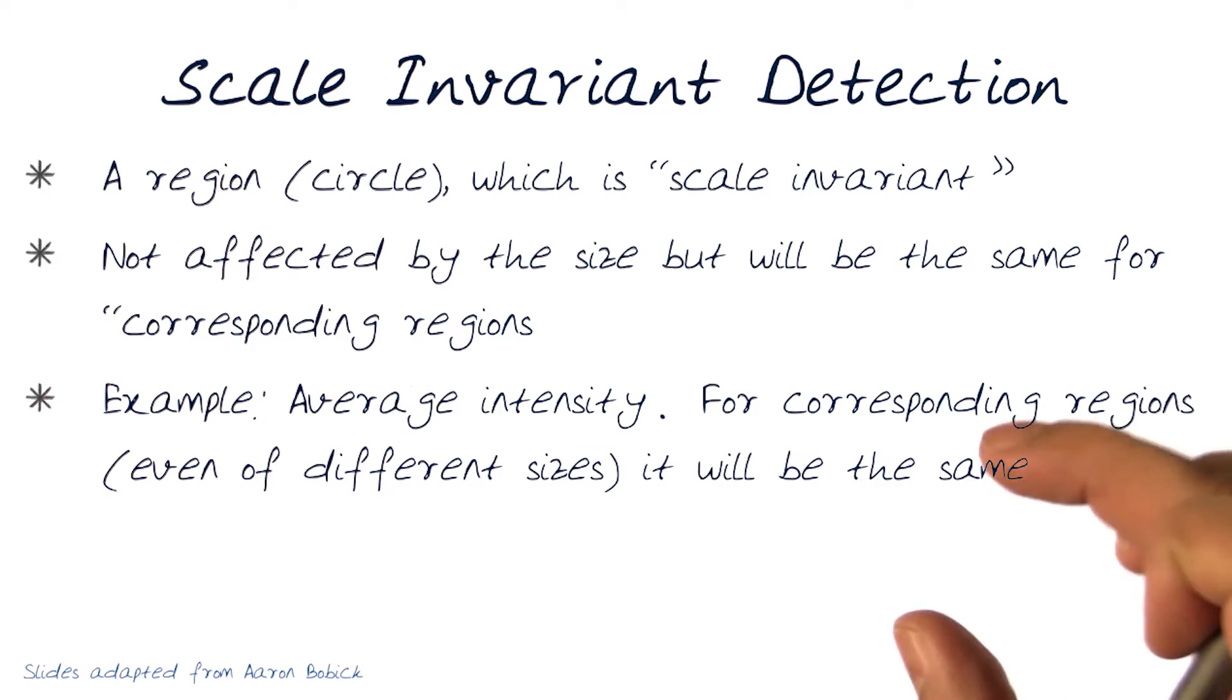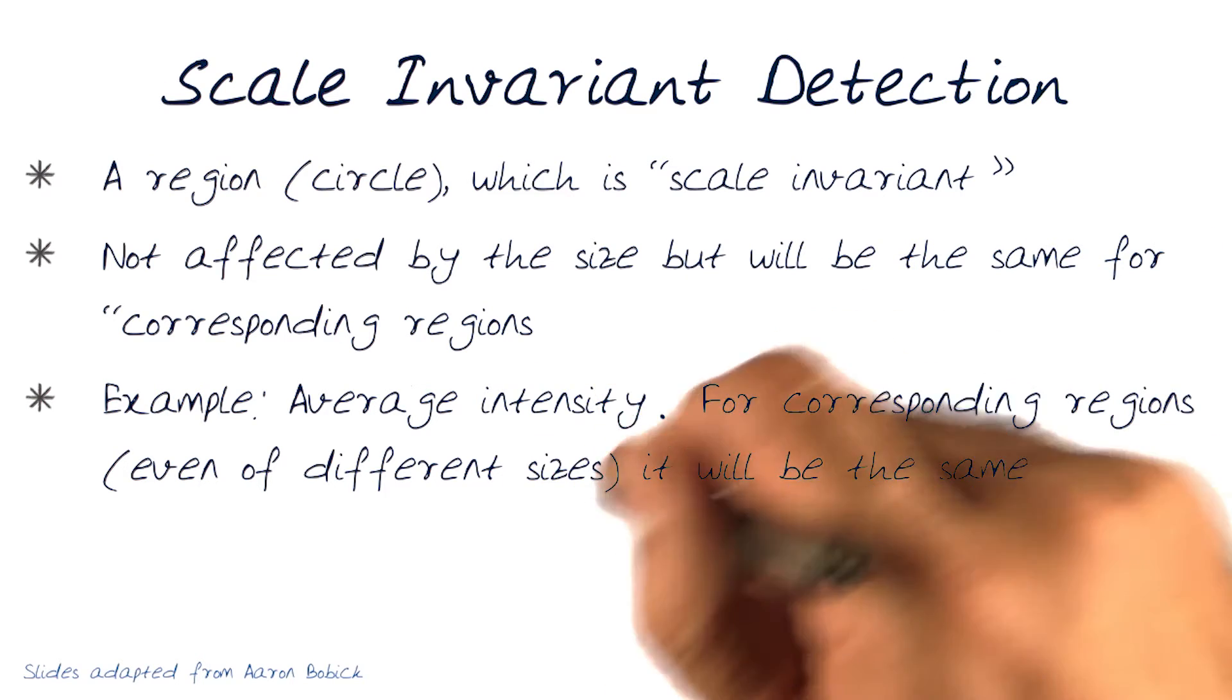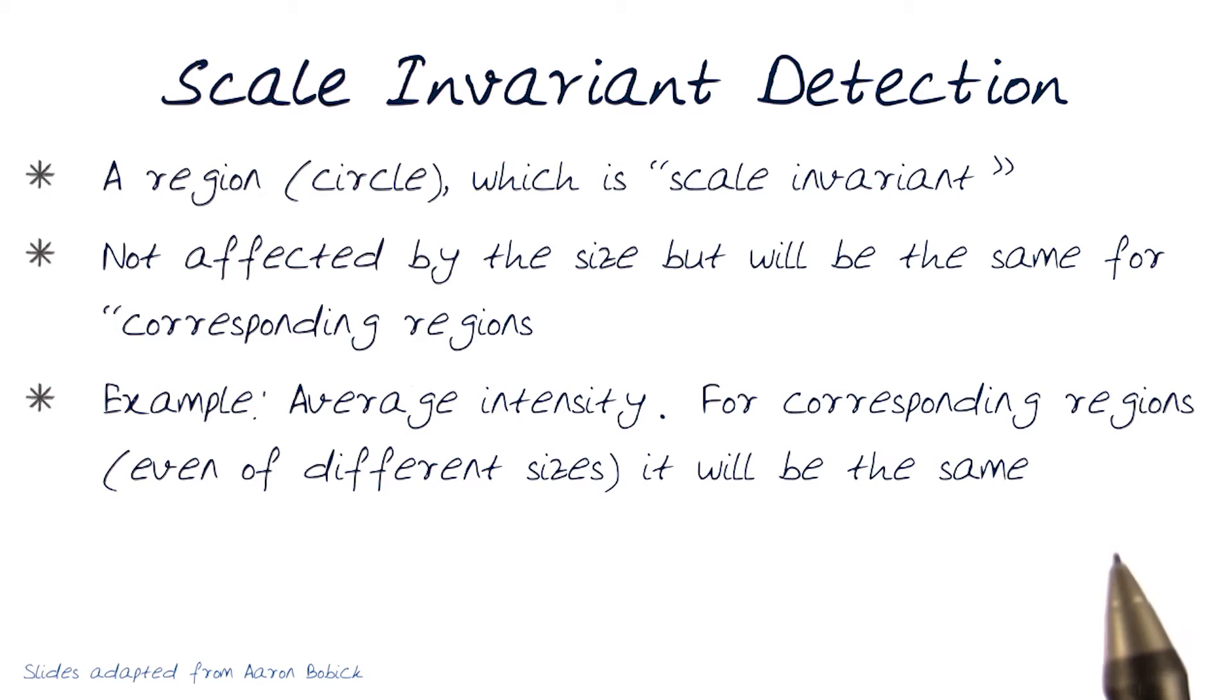While we zoom in and out, we need to look at the fact that if we have a region in both parts, the average intensity of that region, if it's the same object, should be the same. Because it's the same object, just viewed at different scales.